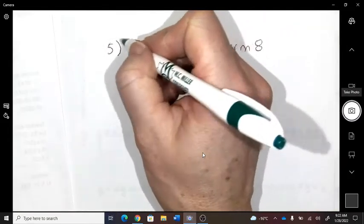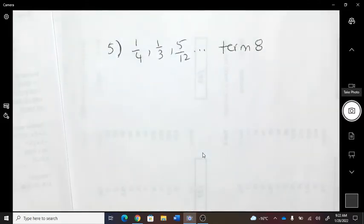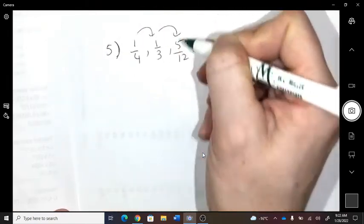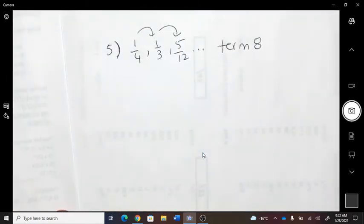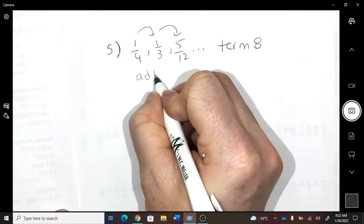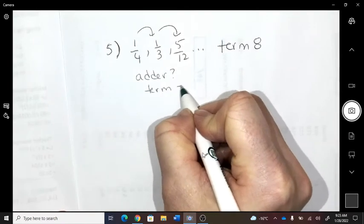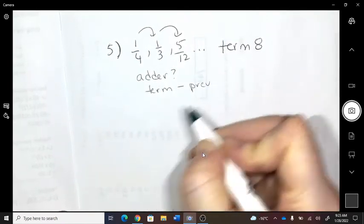Okay, so question number five in your booklets. Did we find that one? Does it look right? So we all know that we're going to need our common adder. Can you just see it when you look at fractions? Probably not. So how do we find an adder? We take a term and we subtract a previous term.